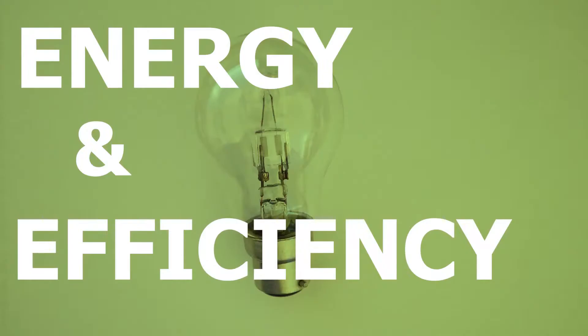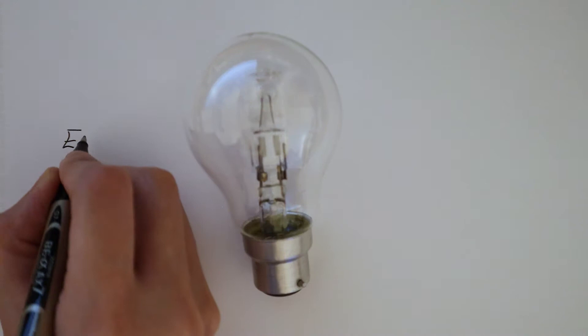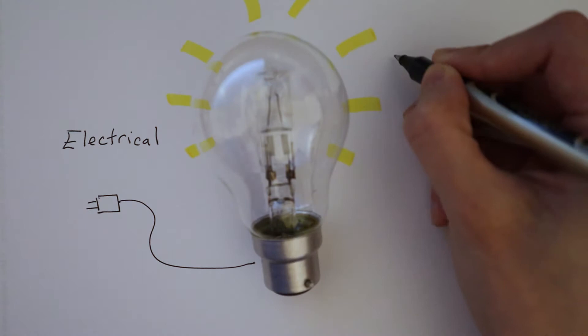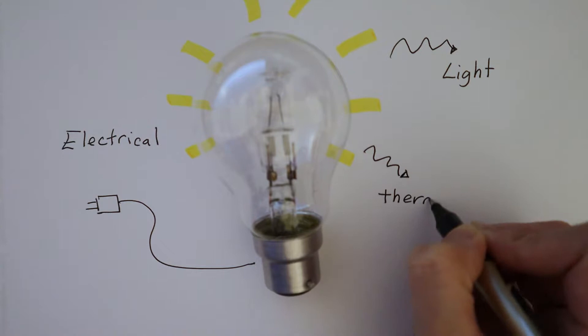The purpose of using a light bulb is so that you can see in the dark. It transfers electrical energy from our wall sockets into light energy. This is the useful energy. Some of the electrical energy is transferred into thermal energy or heat. This is the wasted energy.